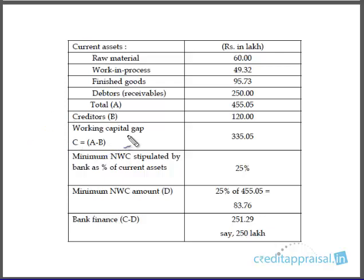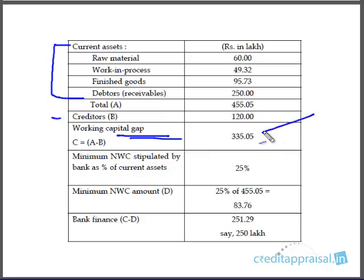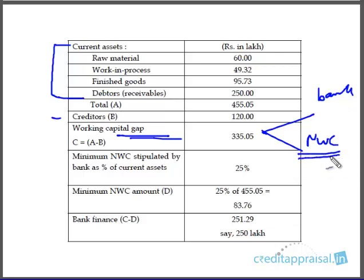So we added something known as working capital gap. Working capital gap is arrived by taking all the current assets and deducting direct creditors. This working capital gap will be shared between the bank and the borrower margin. The minimum NWC varies from bank to bank — normally it is 25% of current assets for large borrowers. Whatever is the balance, the bank takes up that share.